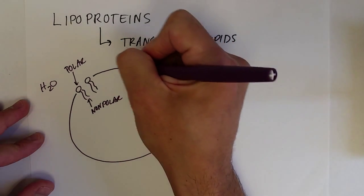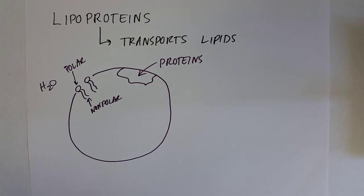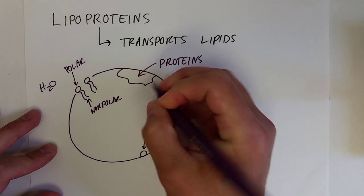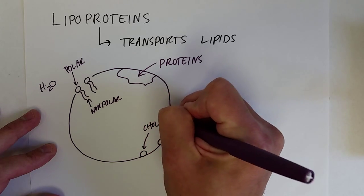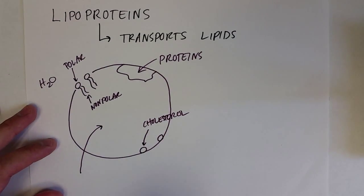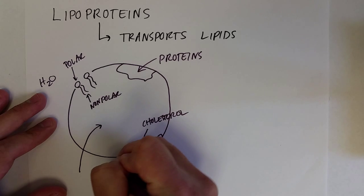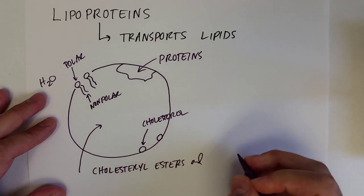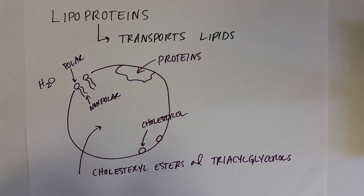There are also proteins on the outside of this membrane that serve various functions, and you might also have cholesterol molecules giving some structure to the outside of this lipoprotein. Inside these spherical lipoproteins are the lipids that your body is trying to transport — primarily cholesterol esters and triacylglycerols.